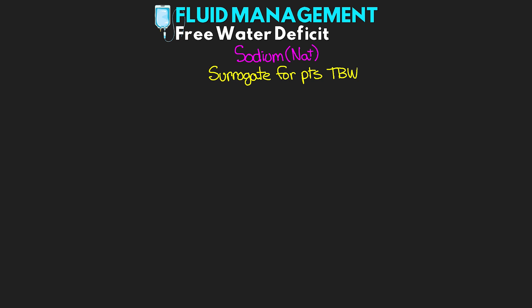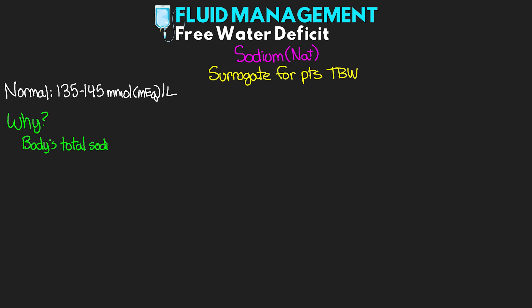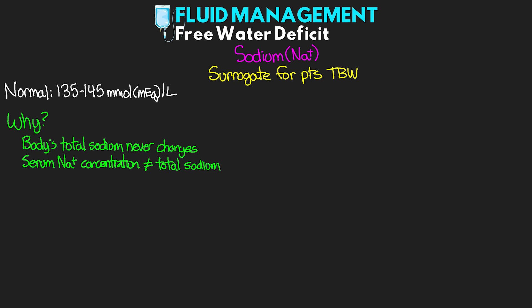Whether their sodium levels are in the normal ranges — which range from 135 to 145 millimoles or milliequivalents per liter — whether they're hyponatremic or hypernatremic, we can use this information to determine what their body composition of water is. And why is this? Our body's total sodium amount actually never changes, and so our serum sodium concentration does not equal our total sodium — that total sodium is never changing.